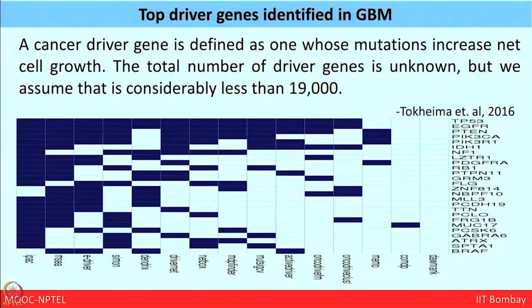Before moving to how proteogenomics is playing a role in cancer diagnosis, I want to give a brief account of what cancer driver genes are. A cancer driver gene is defined as one whose mutation increases net cell growth. The total number of driver genes is unknown, but we assume it is considerably less than 19,000, as given by Tokehima et al. in 2016. From the driver gene repository, you can see that the top driver genes include TP53, EGFR, and PTEN, and how these hallmark driver genes are important in glioblastoma tumorigenesis.